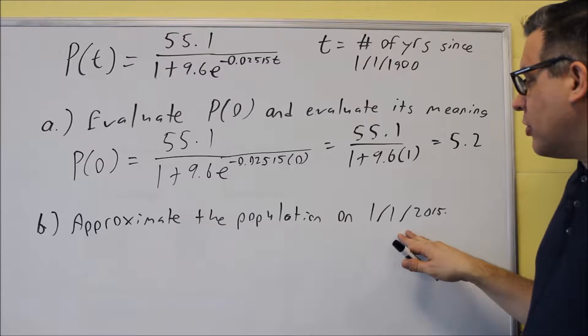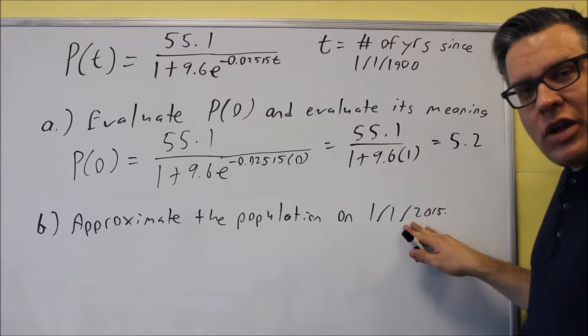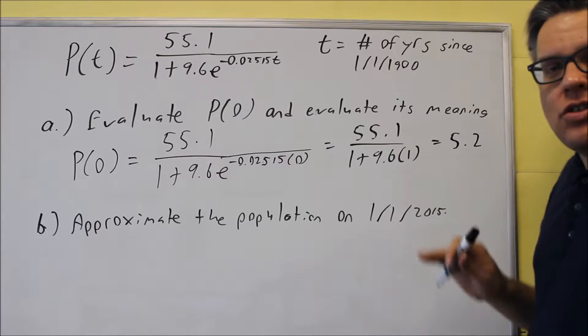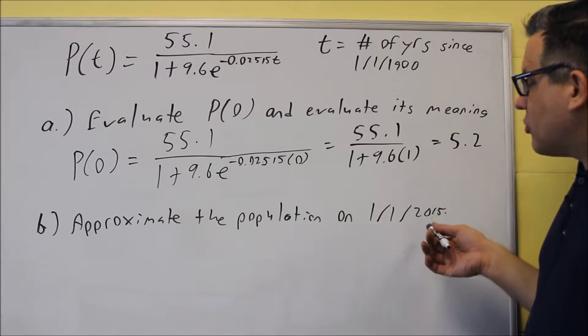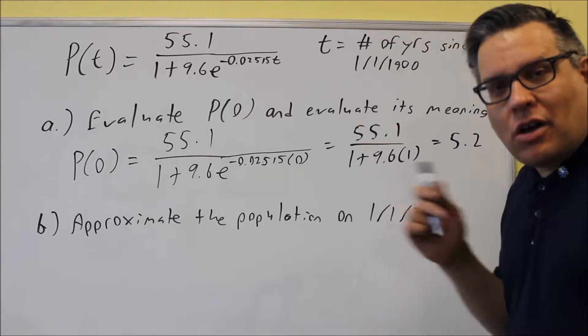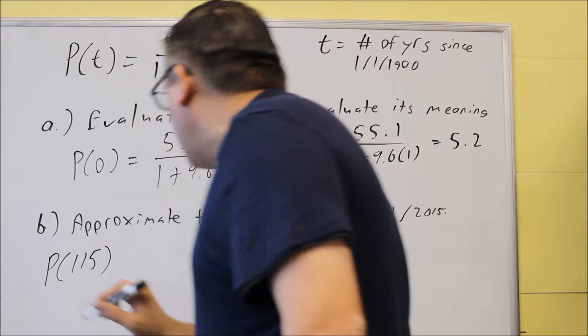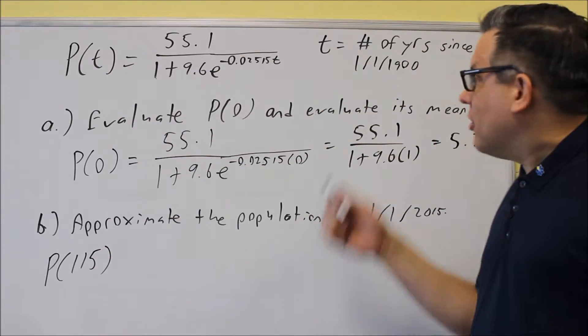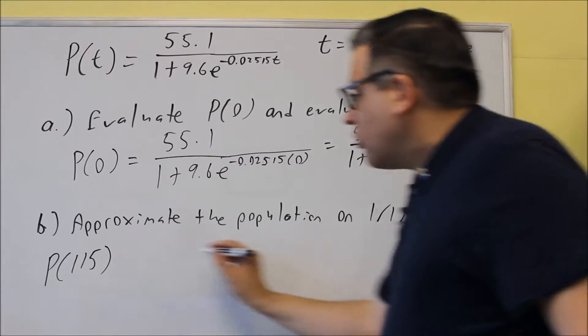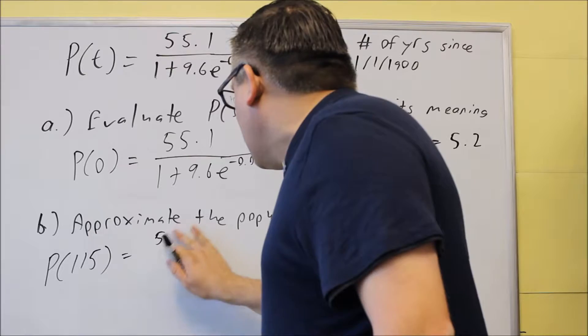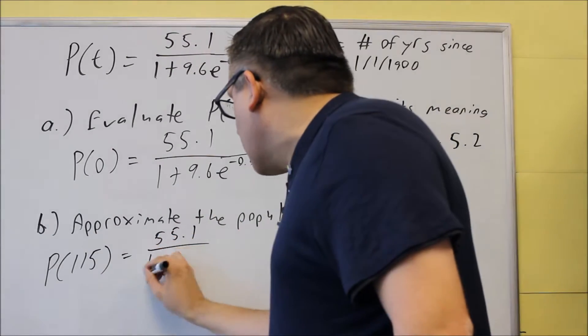Next, they want you to approximate the population on January 1st, 2015. Now in order to get this, we have to figure out how many years have passed since 1900. Because remember, time is the number of years since 1900. So if you take 2015 minus 1900, you're going to get 115 years. So next, what they want you to do is find the population 115 years after 1900, which will give you 2015. Okay, so this means that we're going to do the same thing as before, except instead of putting in a 0 for time, we're going to put in 115.